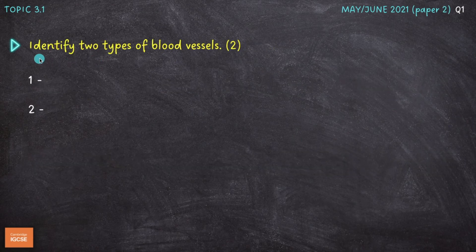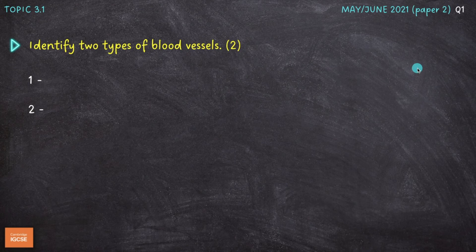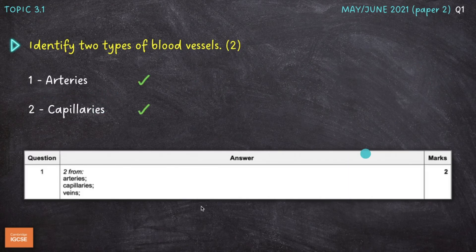Next question: identify two types of blood vessels. 'Identify' is just the same command word as 'name,' so we need to name two blood vessels. I've gone for arteries and capillaries, but the other one we could have gone for was veins. Two easy marks there.